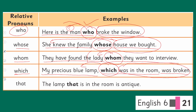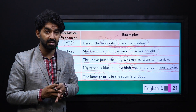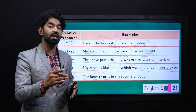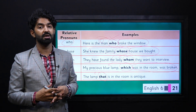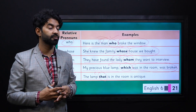At the end we have the relative pronoun 'that.' Example: 'The lamp that is in the room is antique.' The word 'that' is used to relate to the noun and tells us that this is the lamp that was in the room. Hence, this relative pronoun is relating these two things together.